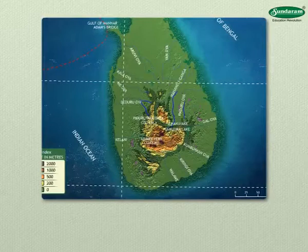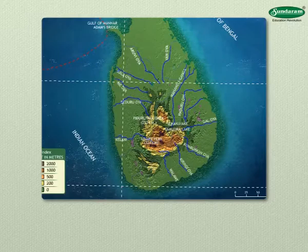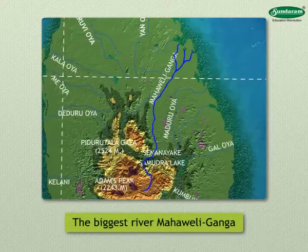Most of the swift-flowing rivers from the central mountainous region flow towards the coast in all directions and meet the sea. The biggest river, Mahavali Ganga, is in the eastern region.